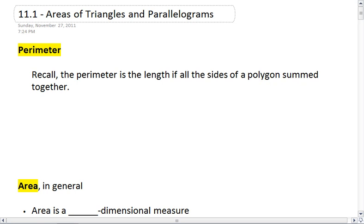Now we're looking at all of our shapes together, we're looking at their area, and we do need to remember what perimeter is. Perimeter is the length of all the sides of a polygon summed together.